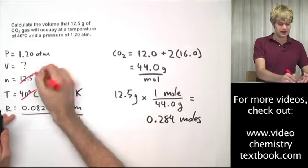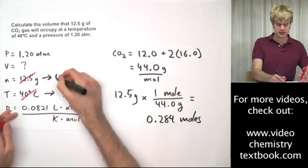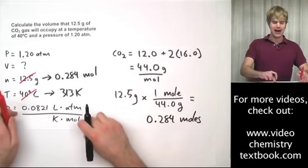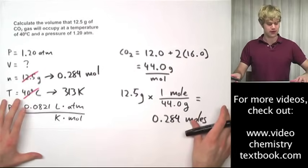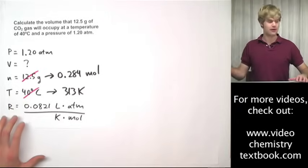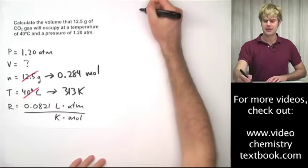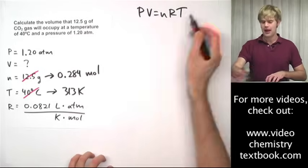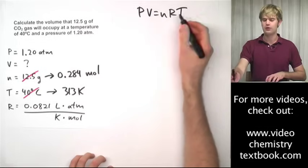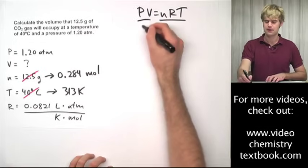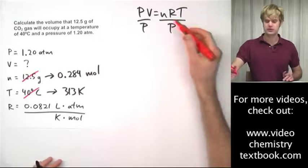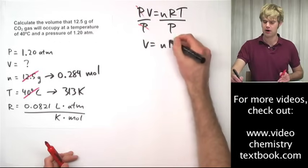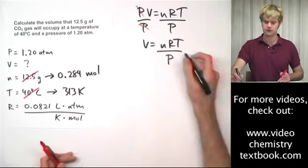So we can cancel out grams and show that we've changed this into 0.284 moles. Now, everything that I have in terms of my variables matches with a value that I have on R. So, I'm going to take PV equals nRT, the ideal gas law, and rearrange this to get V by itself. So, all I have to do is divide both sides by P, then the P's cancel out and I get V equals nRT divided by P.